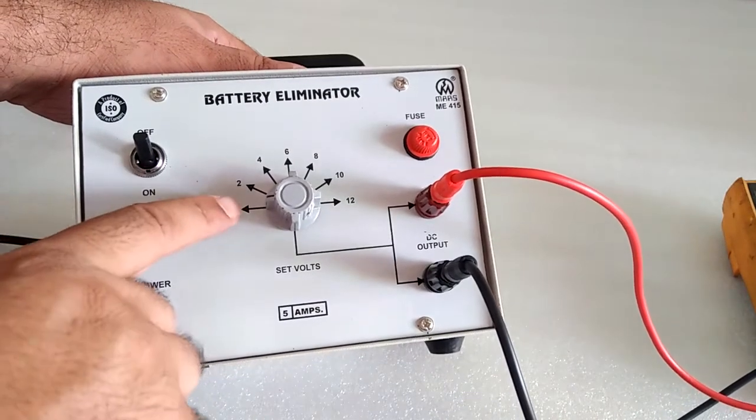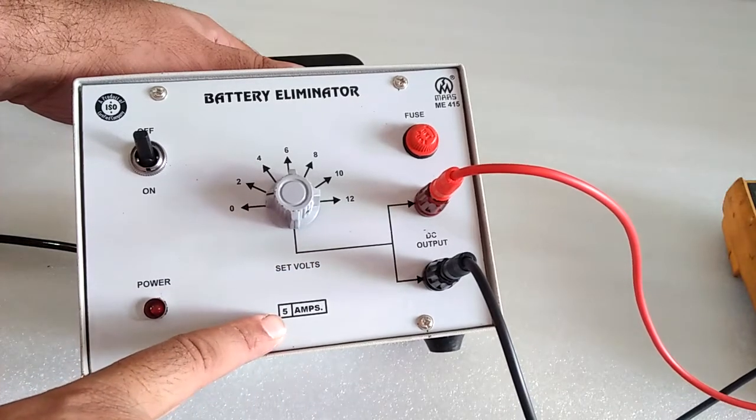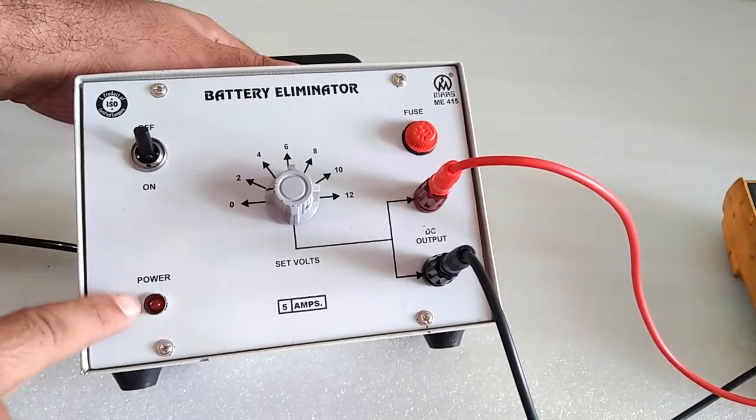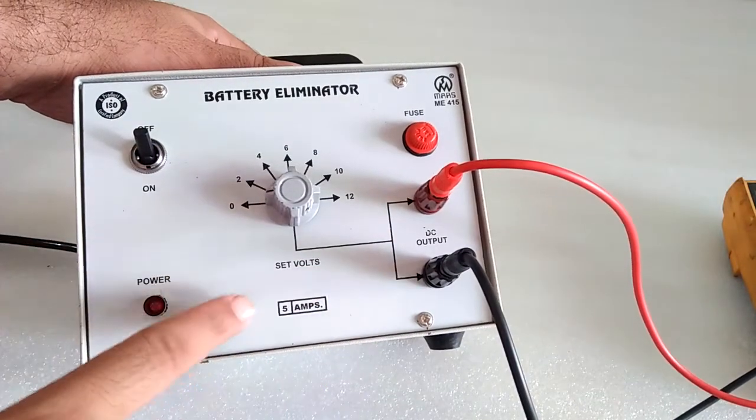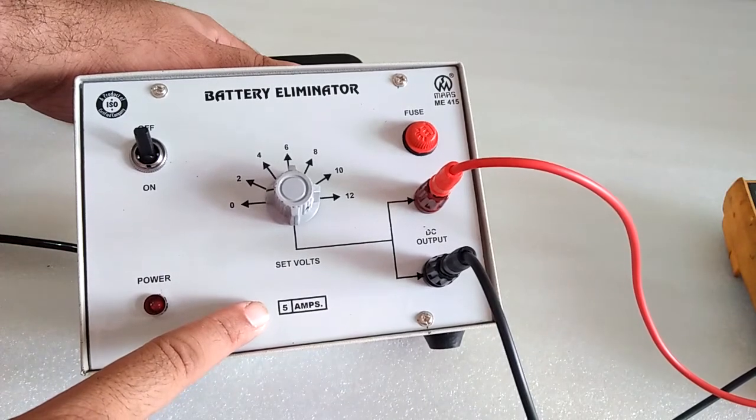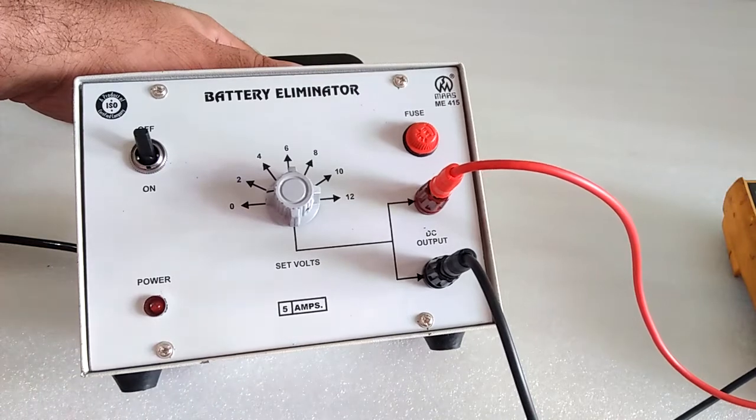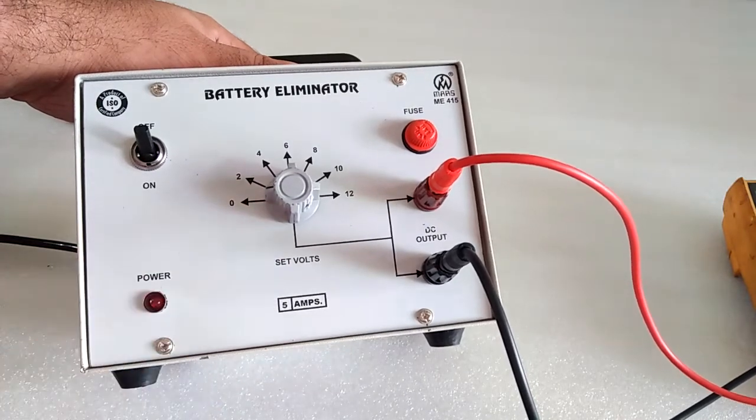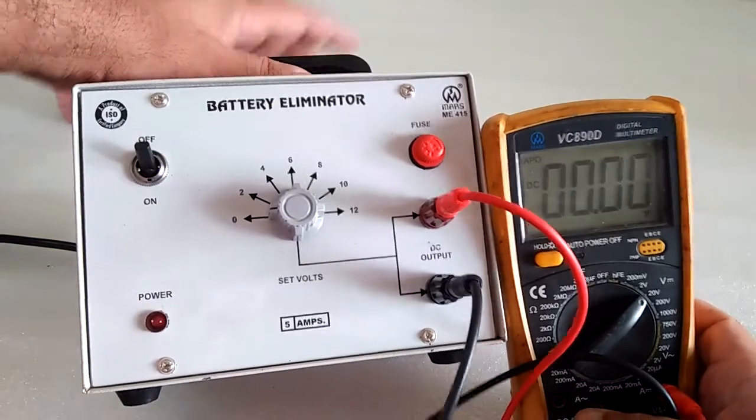This is the battery eliminator, from 0 to 12 volt and 5 ampere. This is the main on-off switch, power indicator, fuse, and here is the DC output. We can use the battery eliminator at different places in circuits. For checking this, I have used this multimeter.